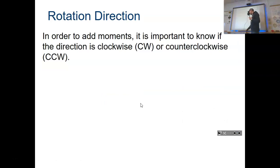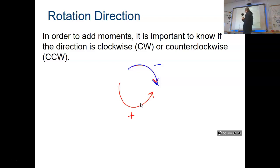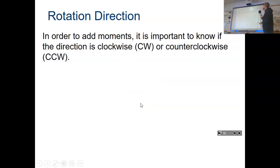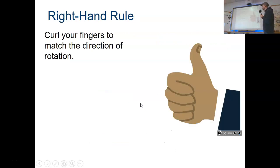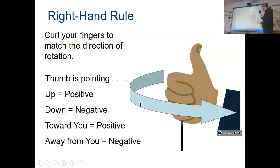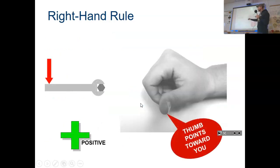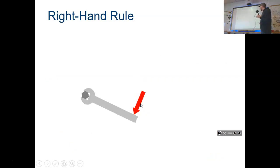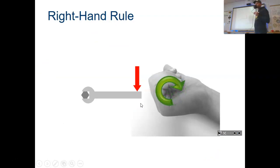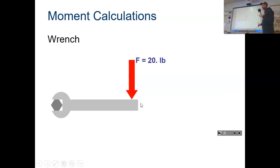The direction: when we turn clockwise, that's a negative moment. When we turn counterclockwise, that's a positive moment — because on the Cartesian plane, counterclockwise is positive. You can use the right-hand rule: curl your fingers in the direction of the force, and if your thumb points toward you, that's positive. If your thumb points away from you, that's a negative torque or negative moment.